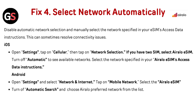Network Selection: disable automatic network selection and manually select the network specified in your eSIM's access data instructions — this can sometimes resolve connectivity issues. For iOS: open Settings, tap on Cellular, then tap on Network Selection. If you have two SIMs, select the AirLo eSIM. Turn off Automatic, then select the network specified in your AirLo eSIM's access data instructions.